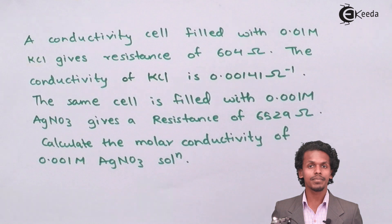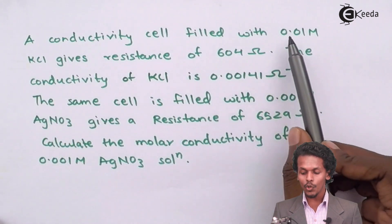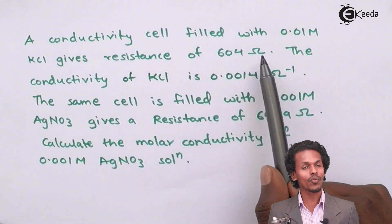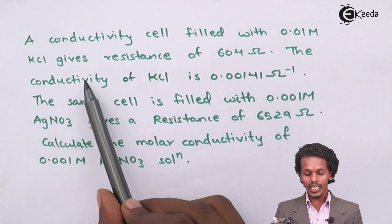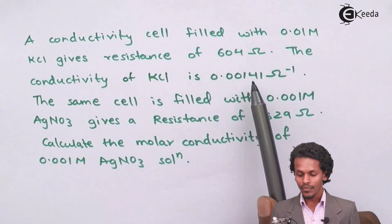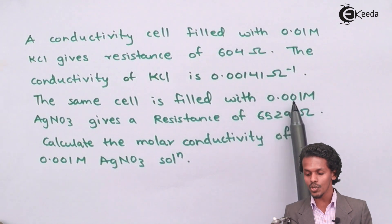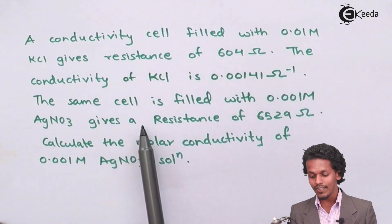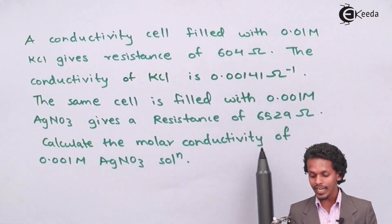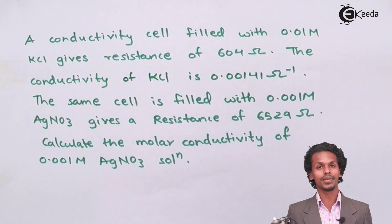As mentioned on the screen, a conductivity cell filled with 0.01 molar KCl solution gives a resistance of 604 ohms. The conductivity of KCl is 0.00141 ohm inverse. The same cell filled with 0.001 molar AgNO3 gives a resistance of 6529 ohms. Calculate the molar conductivity of 0.001 molar AgNO3 solution.